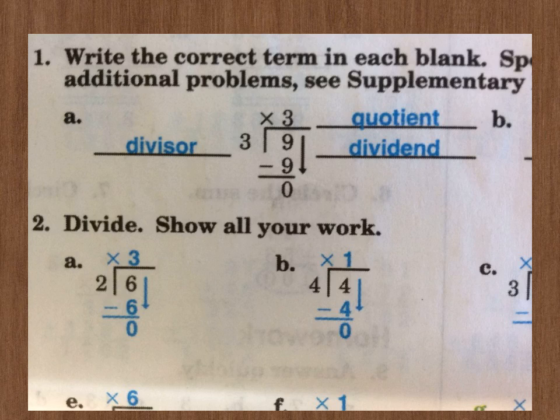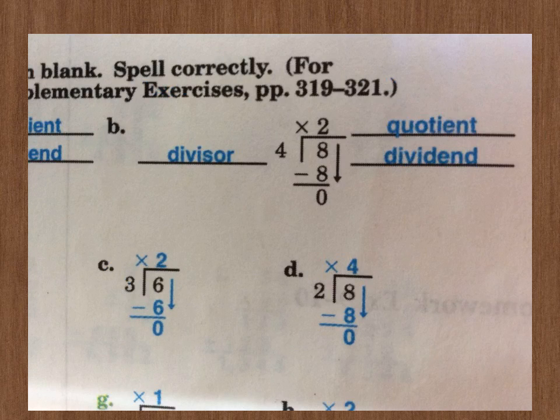And so, as we look at B, we have to do the same thing. We're writing divisor, quotient, dividend. Go ahead and write those down.